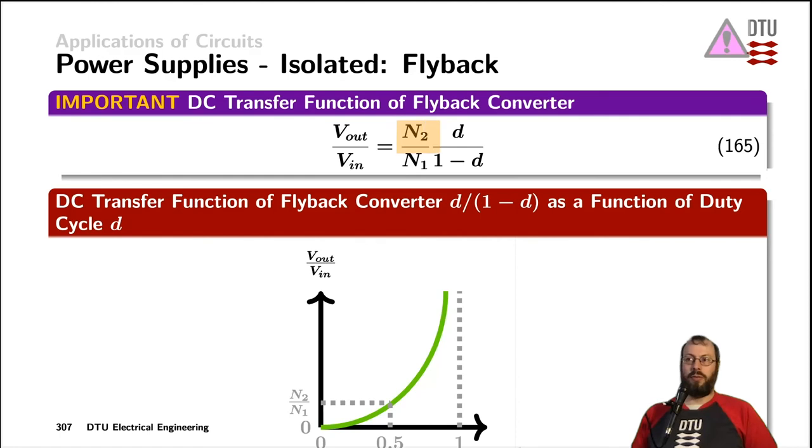The transfer function of a flyback converter to express the output voltage as a function of the input voltage now not only involves the duty cycle, in this case duty cycle divided by 1 minus d, but it also involves the transformer turns ratio N2 divided by N1. Now N2 can be greater than N1, which helps us to transform the voltage up or it can be less than N1, which helps us to transfer the voltage down.